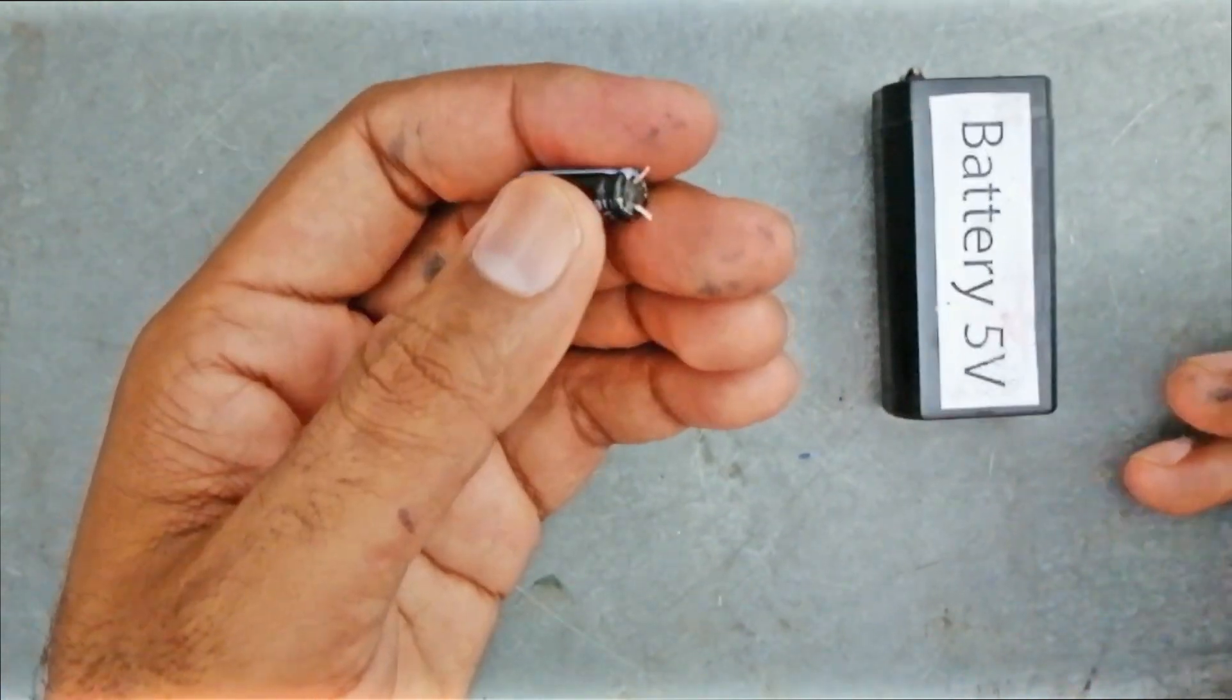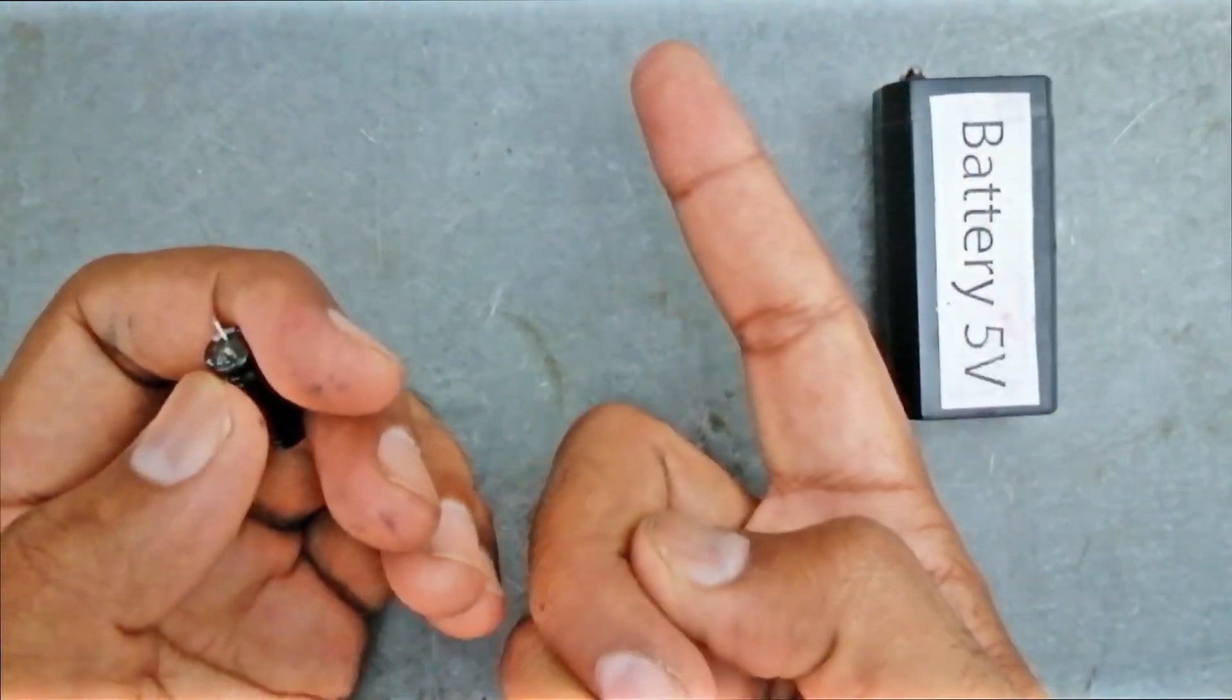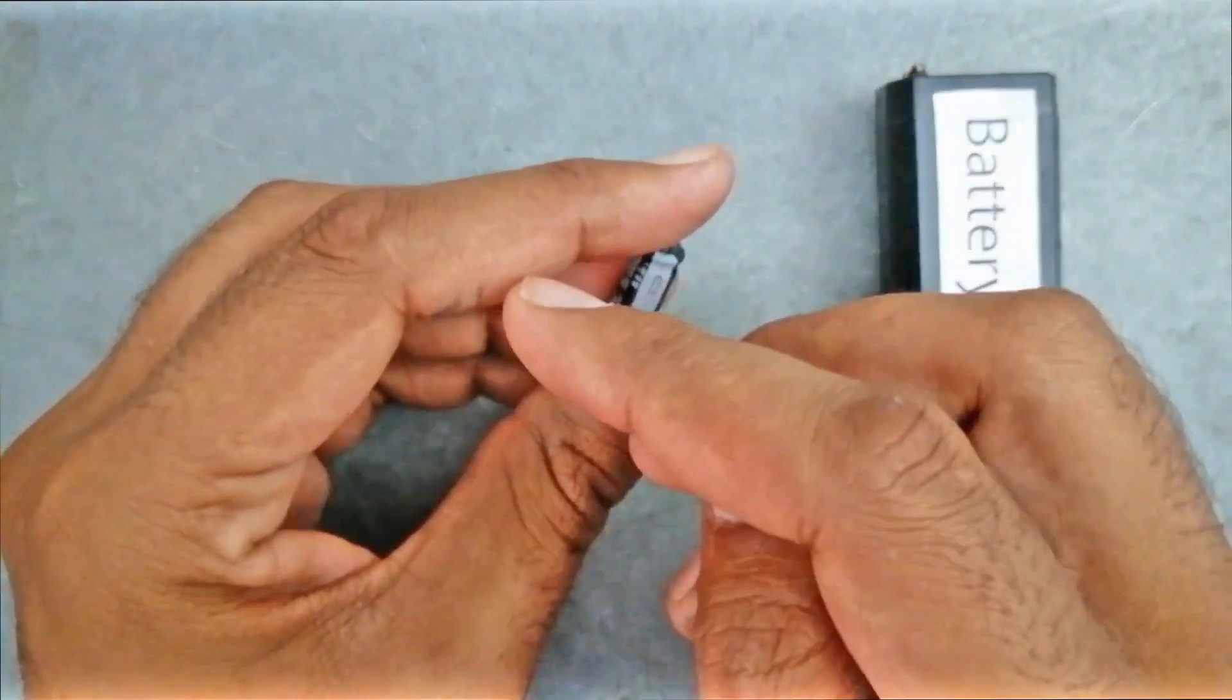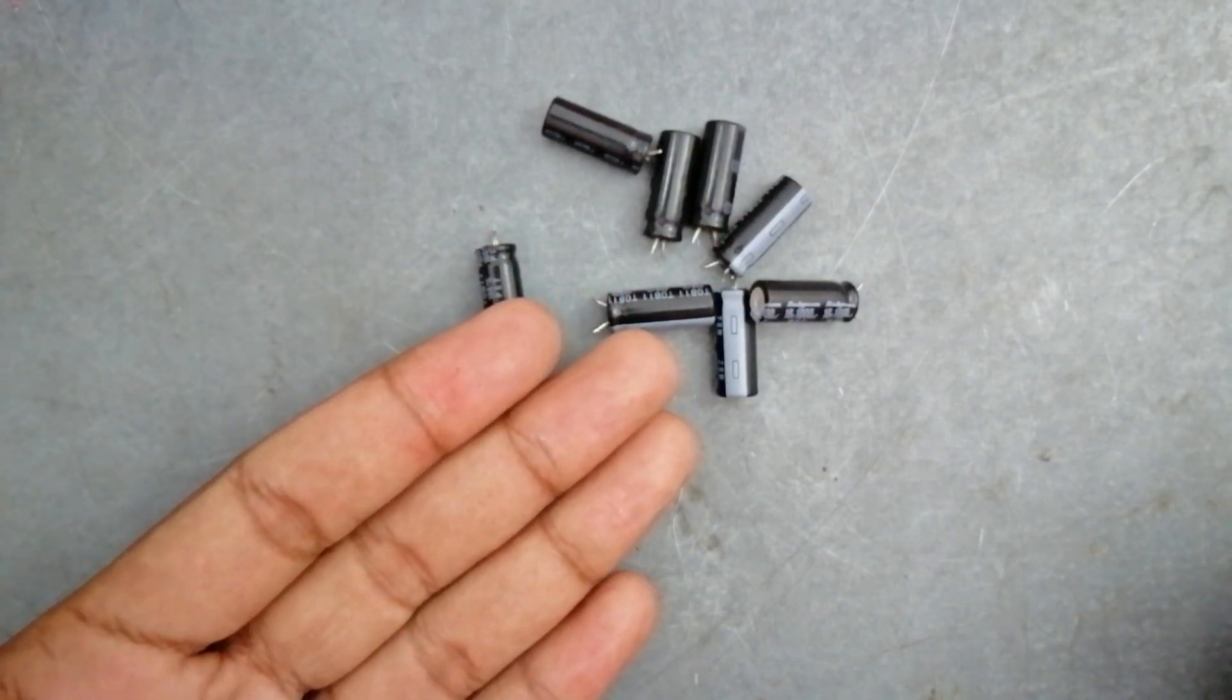Engineers use this property of capacitor to build memory. When it has current inside, it gives one value; when it has no current, it gives zero value. This is only a single capacitor. If we have a lot of capacitors, we can store more data in the form of zero and one.